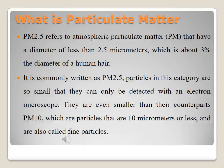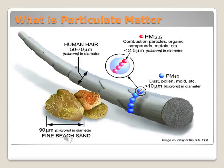Fine particles can come from various sources, including power plants, motor vehicles, airplanes, residential wood burning, forest fires, agricultural burning, volcanic eruptions, and dust storms. Some are emitted directly into the atmosphere while others are formed when gases and particles interact with one another in the atmosphere. This picture represents an efficient comparison of particulate matter 2.5 and particulate matter 10 relative to human hair.